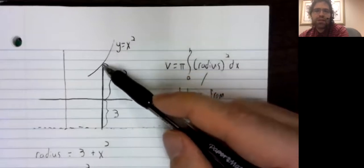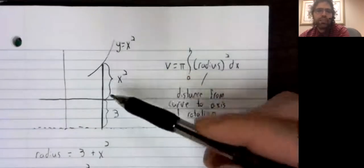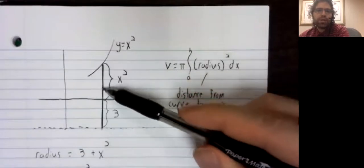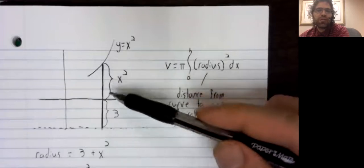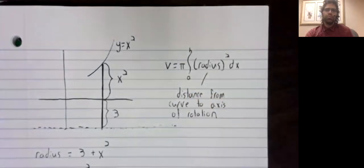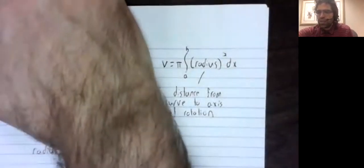Once we had this diagram, we were able to break this distance into pieces and find it without a huge amount of difficulty. If we didn't have this picture, finding the radius might have been rather difficult.